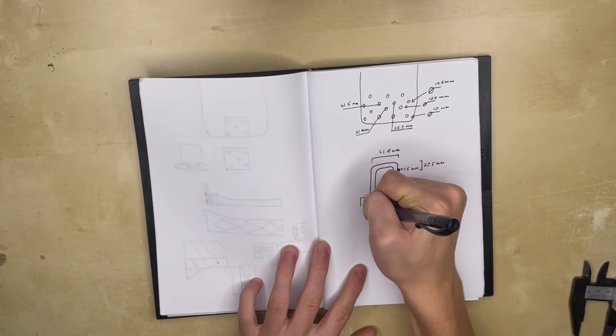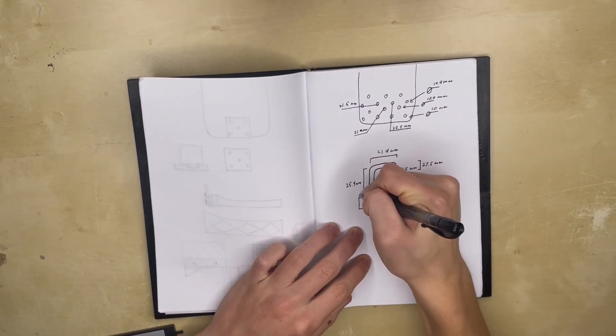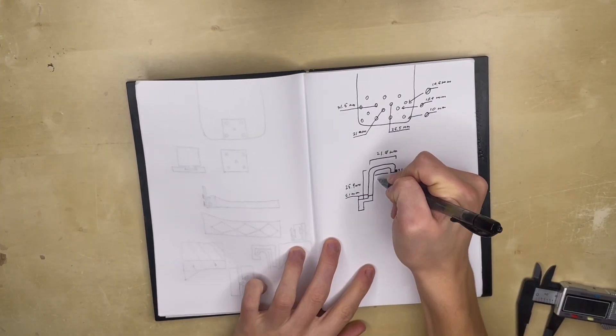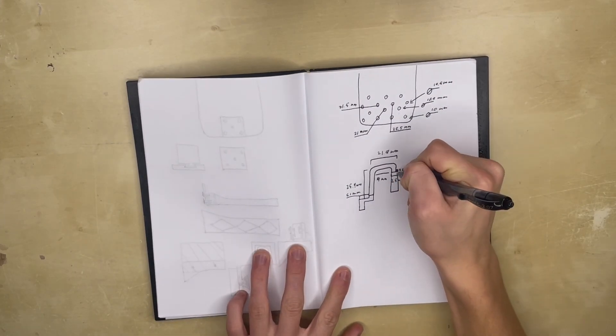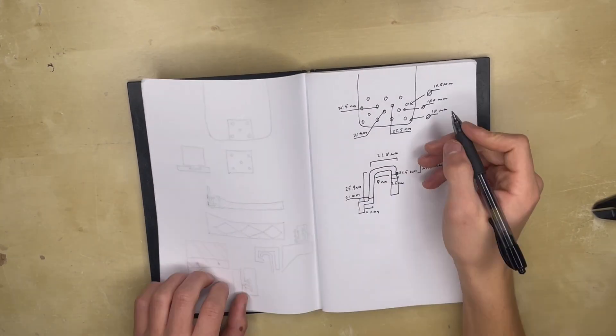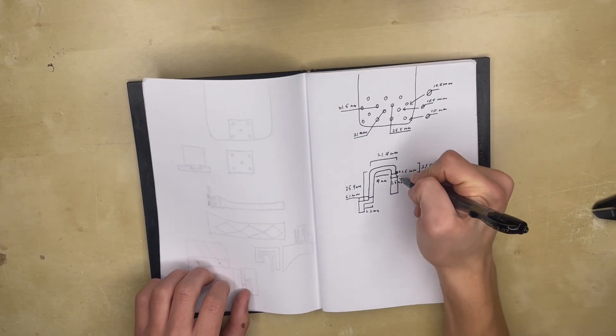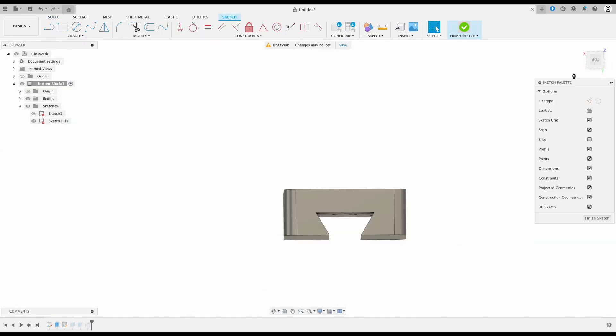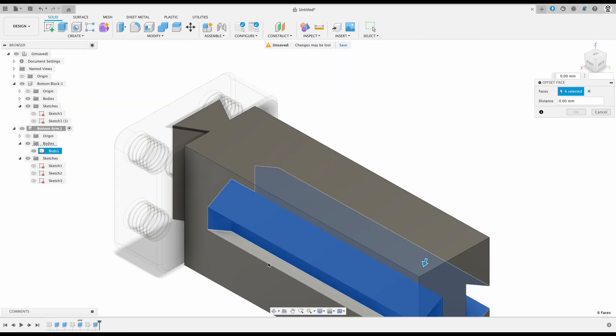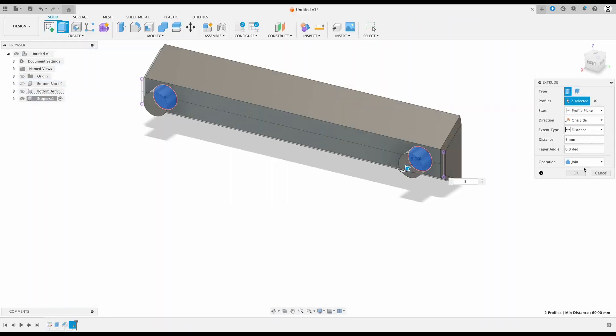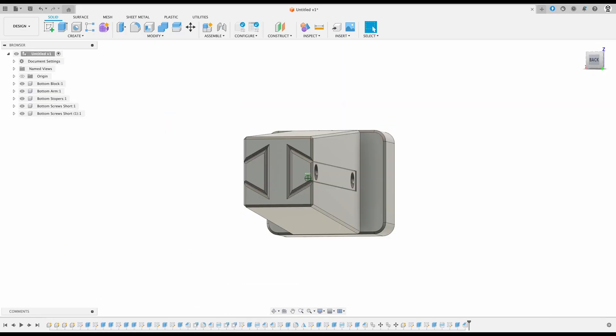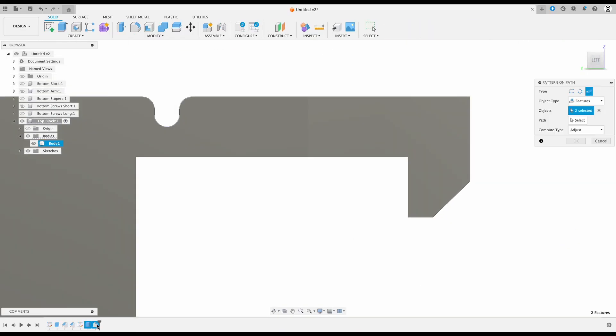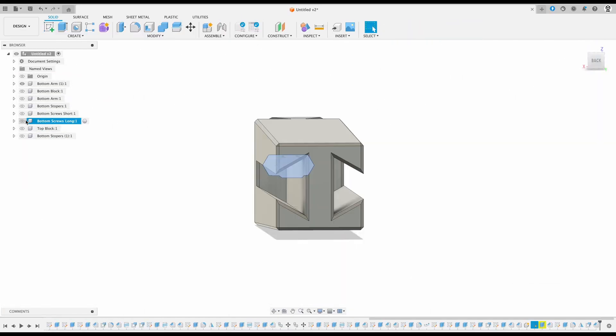After I finish getting the rough outline and start taking actual dimensions, I'm going to try to get every dimension that could possibly be useful because I don't want to have to come back later and grab more dimensions after I've already started designing. Now that I have a rough idea of what I'm designing, I'm going to jump into Fusion 360 and actually start designing. And instead of focusing on perfection, I'm simply going to focus on getting something designed.